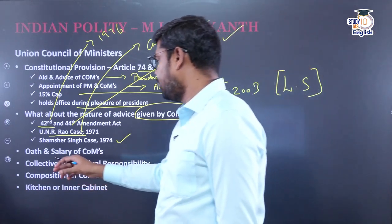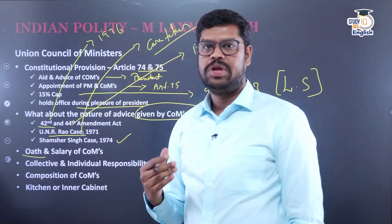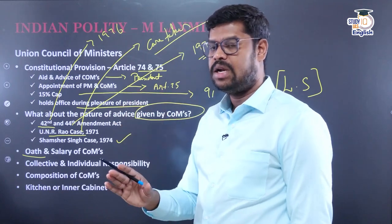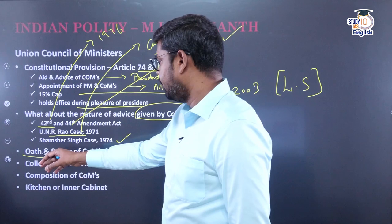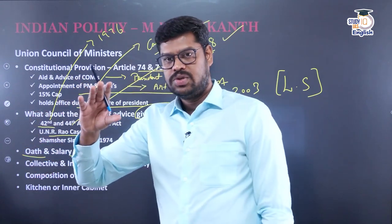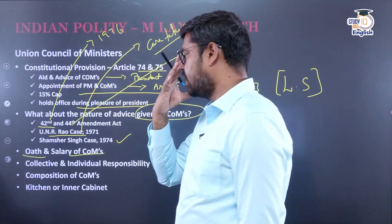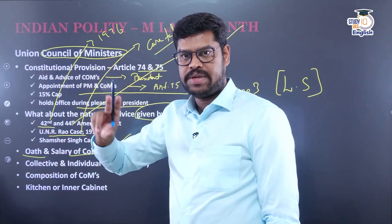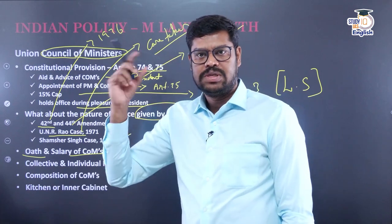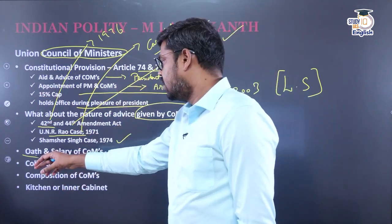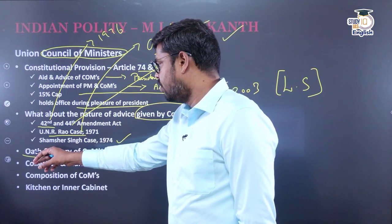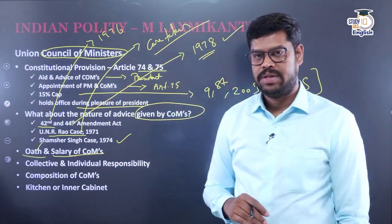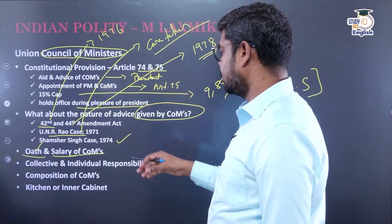The oath of the Council of Ministers is administered by the President. Their salaries are determined by a law made by Parliament. Under the Constitution, there is both collective responsibility and individual responsibility for ministers. Collectively, the ministers are responsible to the Lok Sabha under Article 75 — whatever decisions are made, not a single minister but the entire government is responsible. If a no-confidence motion is brought in and the government cannot prove the majority, the entire Council of Ministers must resign.